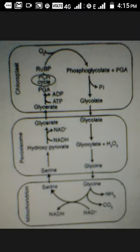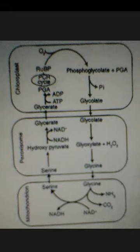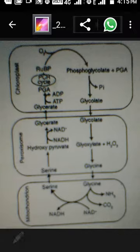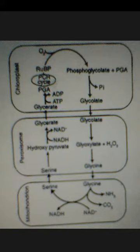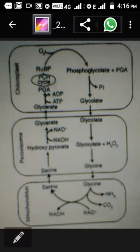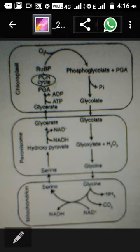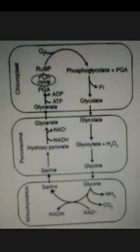The first organelle participating is the chloroplast. In the chloroplast, the RuBisCO enzyme is present, which normally absorbs CO₂ from the atmosphere. But in photorespiration, instead of CO₂, RuBisCO absorbs oxygen, and RuDP is converted into glycolic acid. This is the main difference between photorespiration and photosynthesis.